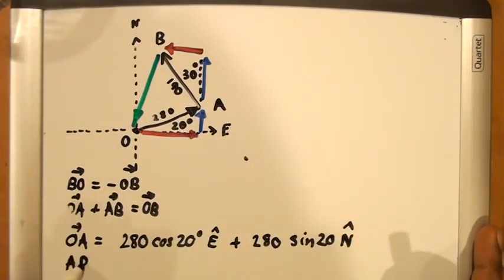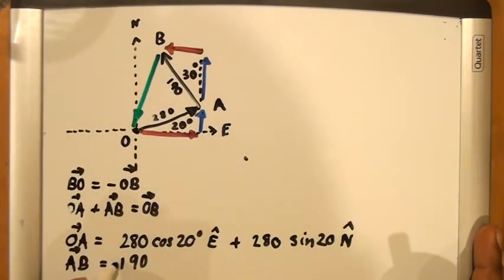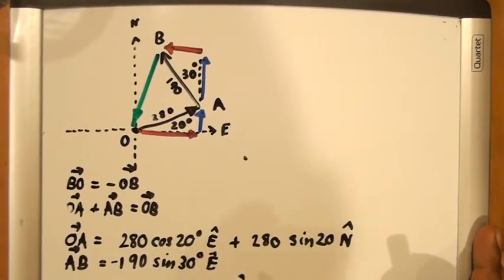Similarly, A to B is going to equal negative 190 times the sine of 30 degrees east, and in the north direction, this blue arrow is going to be 190 cos 30 degrees in the north direction.